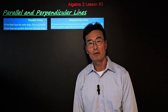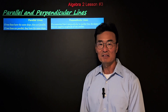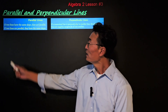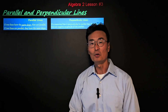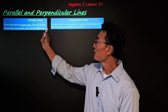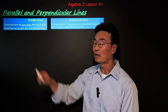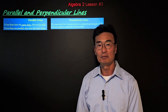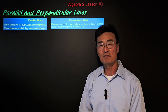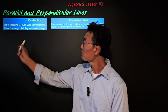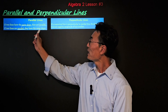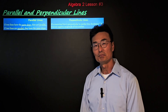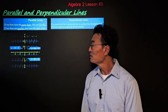The definition of parallel lines is such that if two lines have the same slope, then they are parallel. The other way of saying that is: if two lines are parallel, then they have the same slope.